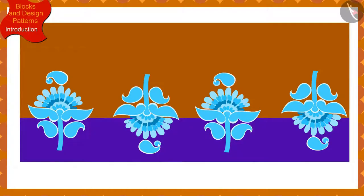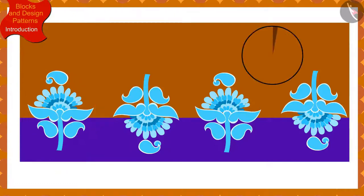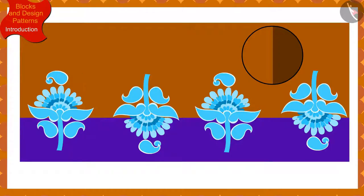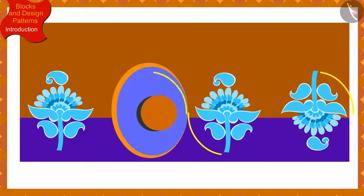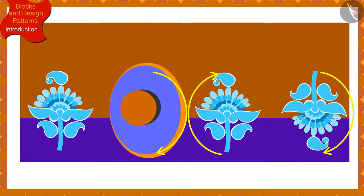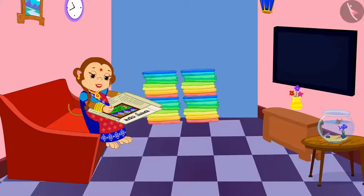If we look closely, we will find that this impression has been made by rotating the previous impression by half in the clockwise direction. In order to create this pattern, Banno has rotated the block of the design by half in the clockwise direction each time.